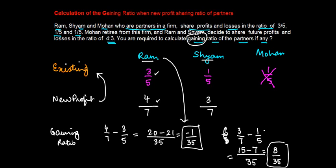So actually Sham is gaining and Ram is losing. Effectively, there is no gaining ratio for Ram, whereas Sham has made a gain of 8/35. The effective ratio is -1:8, which means Ram did not make any gain whereas Sham gained 8/35.